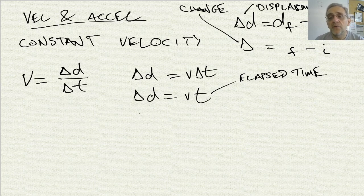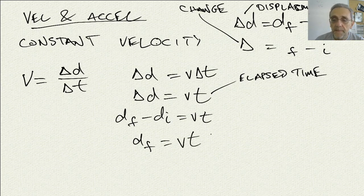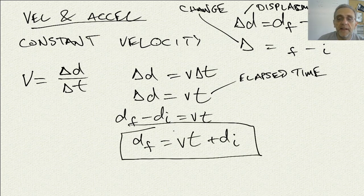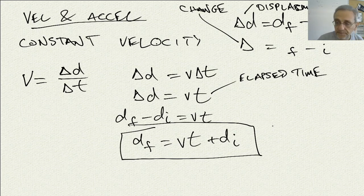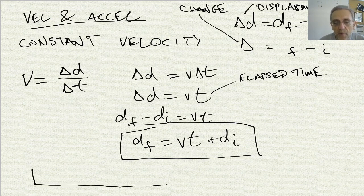We can now expand the delta d and say df minus di equals vt. Then we can write df — final position — equals vt plus di. So here we have an equation for constant velocity. Now that we have this equation, let's try to draw the particle model.